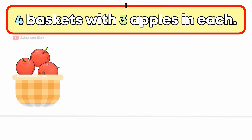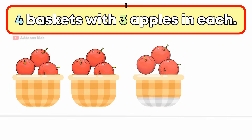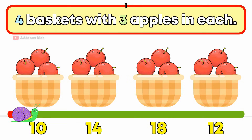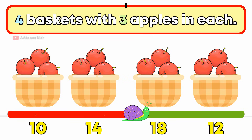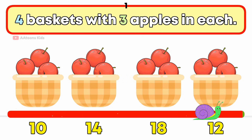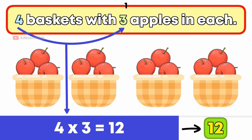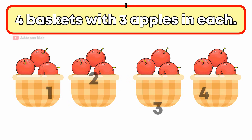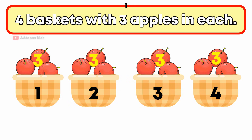4 baskets with 3 apples in each. How many apples are there in total? 12 apples. To find out how many apples there are in total, we need to multiply the number of baskets by the number of apples in each basket. We have 4 baskets, so we write down 4.